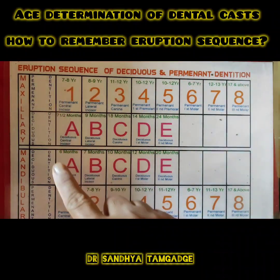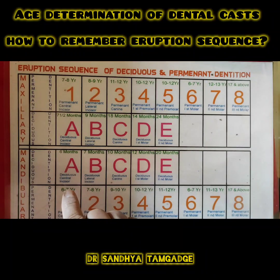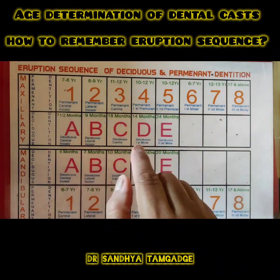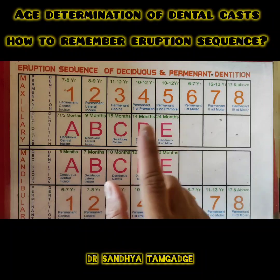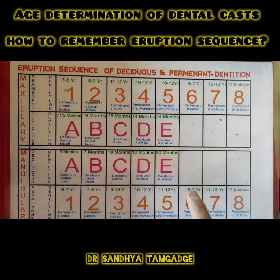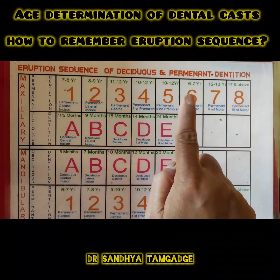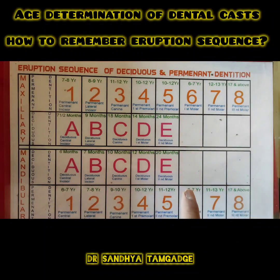In the permanent dentition, the first tooth to erupt is the mandibular permanent central incisor at six to seven years. Permanent dentition erupts in batches. The first batch includes the permanent mandibular central incisor and the permanent first molar — all erupting together at six to seven years.